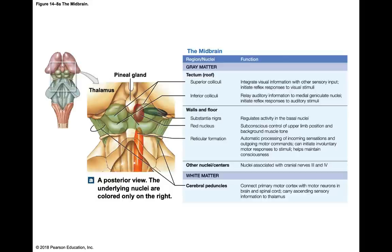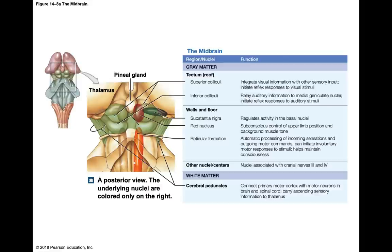The midbrain contains two areas: the tectum (the roof) and the tegmentum (the walls and floor). The tectum contains an area called the corpora quadrigemina, which contains the superior colliculi and the inferior colliculi. These two centers receive information from the eyes and ears and trigger reflexes. The superior colliculi receive information from the eyes, and the inferior colliculi receive information from the ears — superior because your eyes are superior to your ears.